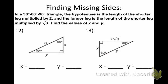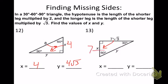Try these two 30-60-90 triangles. Number 12: the value given is the hypotenuse of 8, so the short side is 4, and the long side is 4 square root of 3. Number 13: I have the long side, so find the short side first — it's 7 — and the hypotenuse is 14.